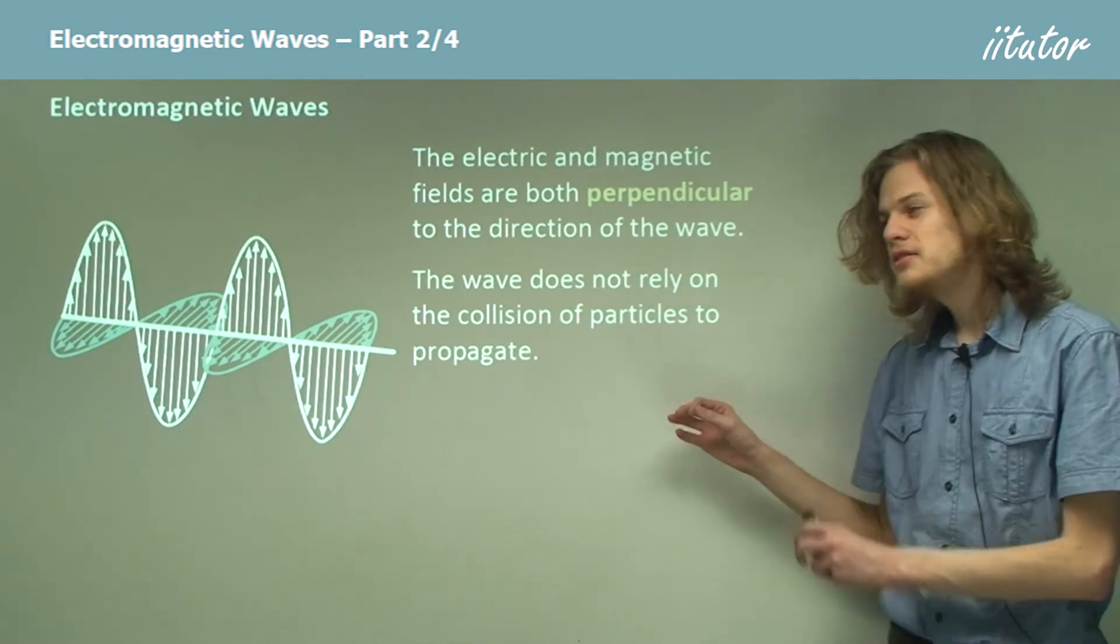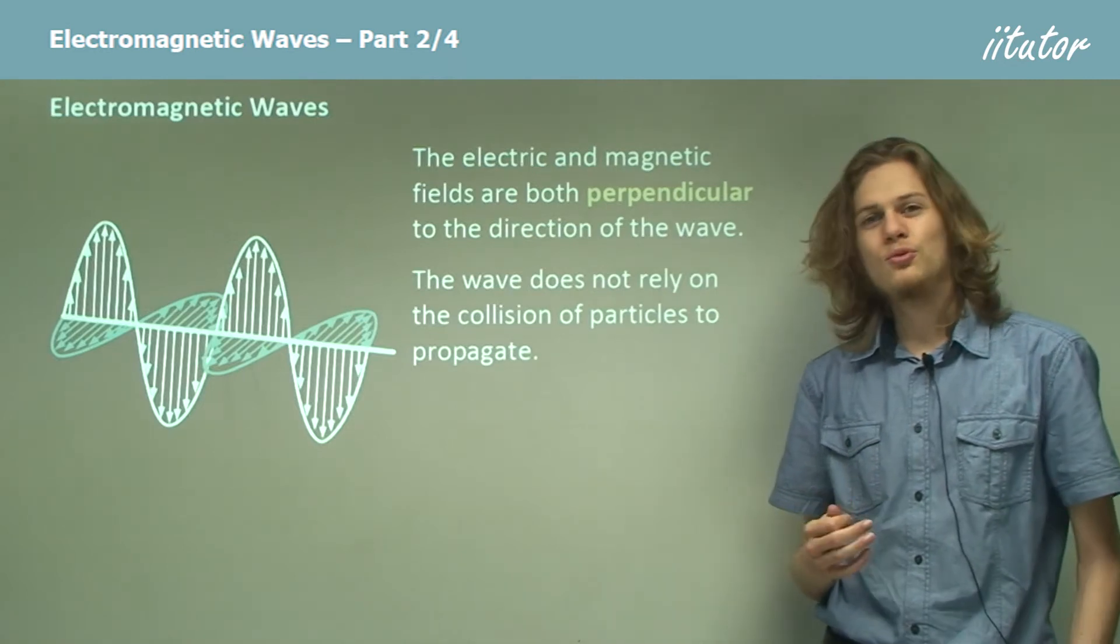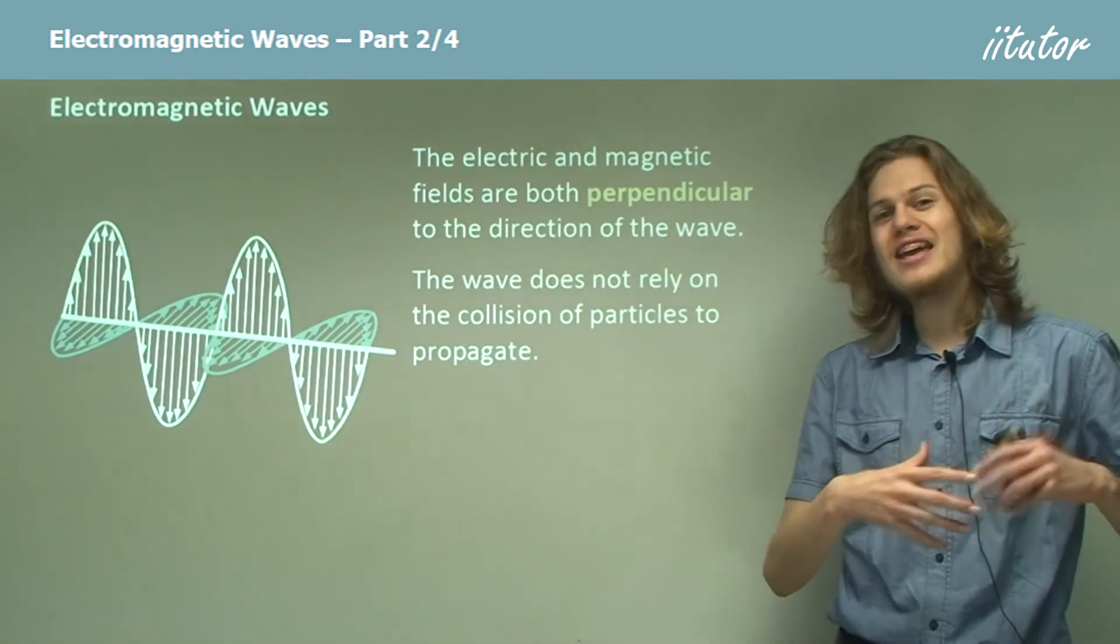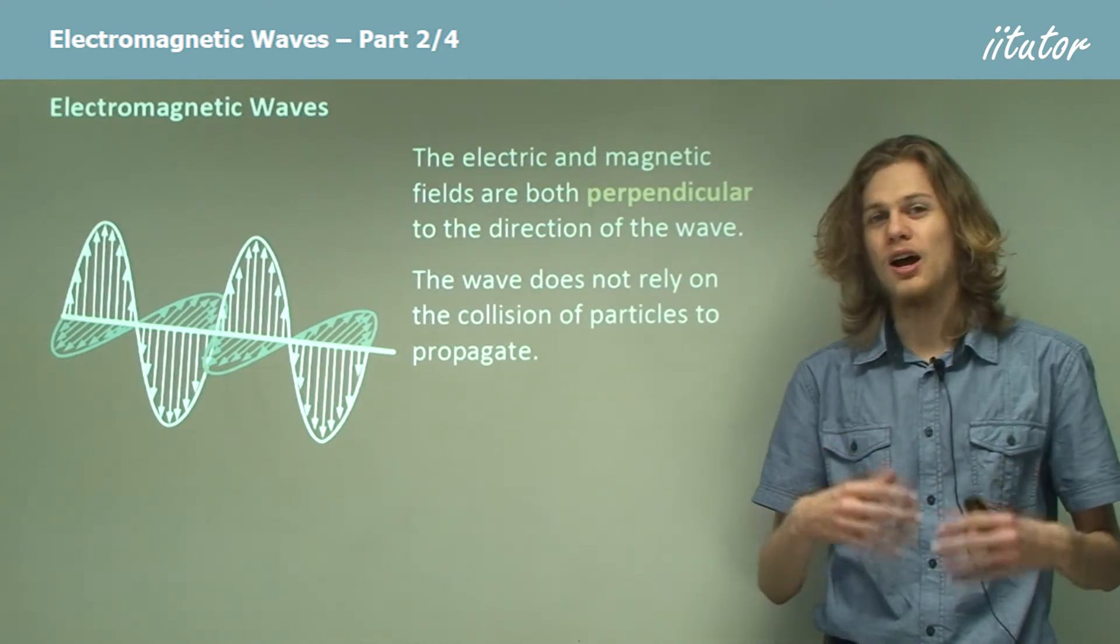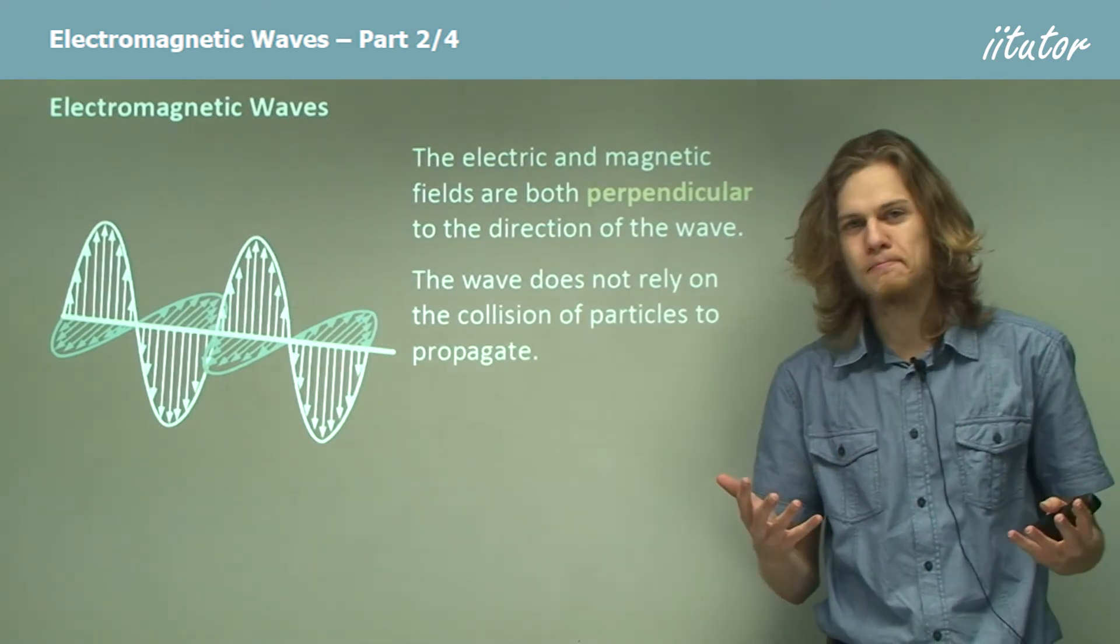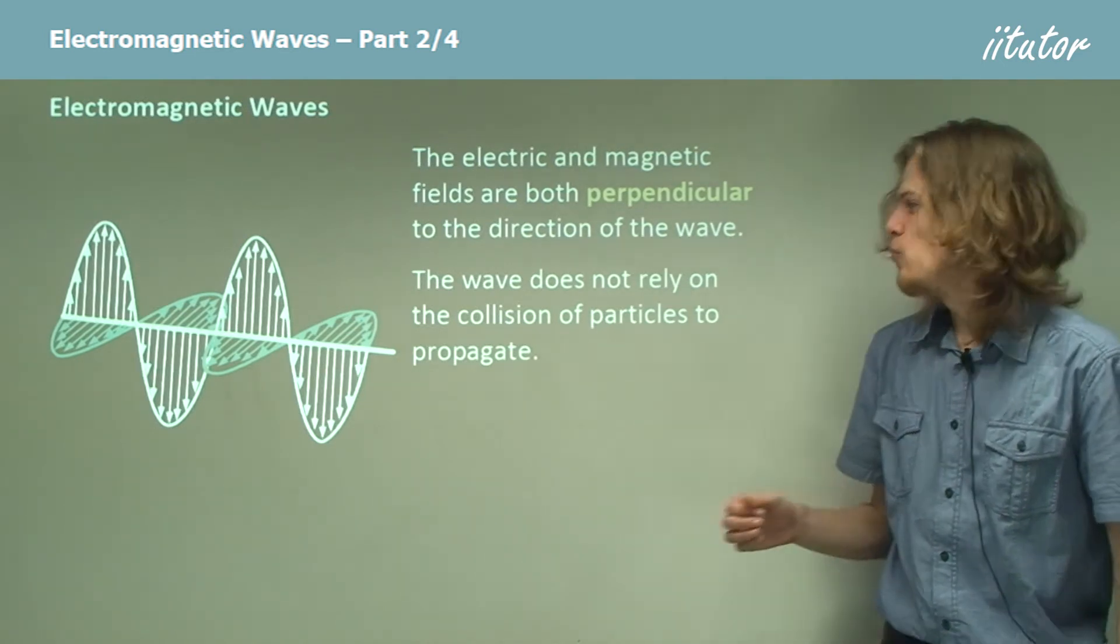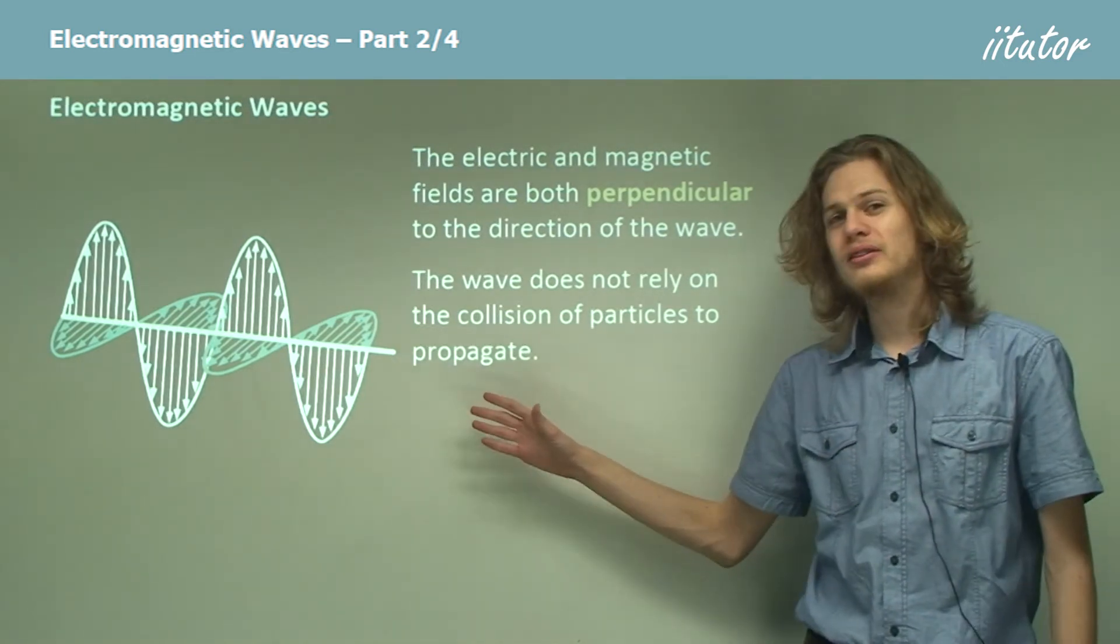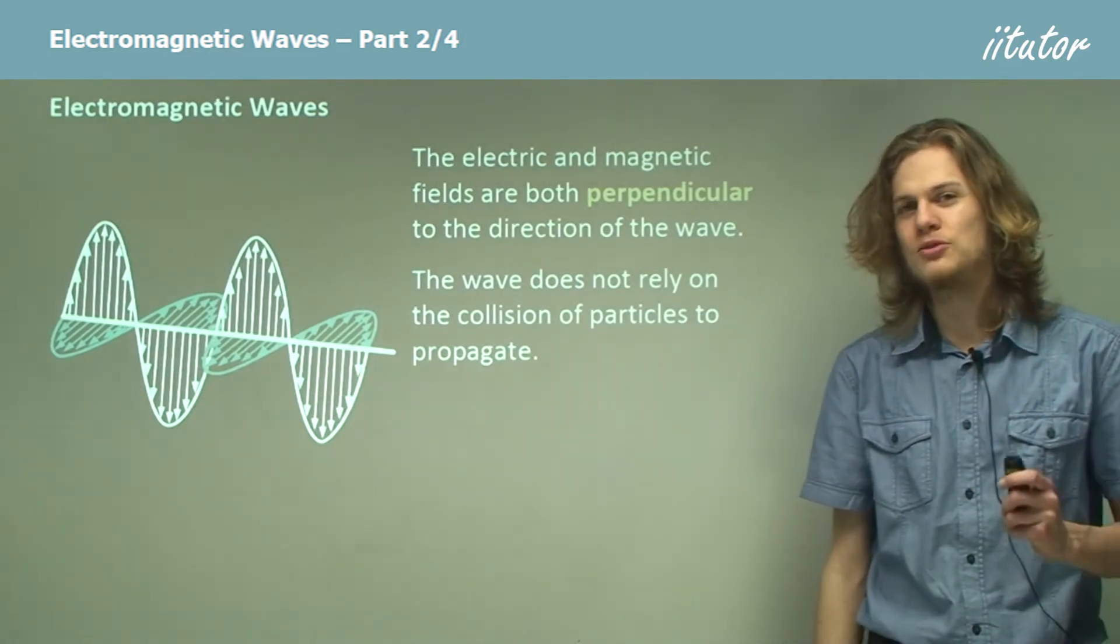As well as this, the wave does not rely on the collision of particles to propagate. We can create electric or magnetic fields even in empty space, where there are no atoms, no air, none of anything. That means that even if we don't have any particles at all, we can still get these electromagnetic waves travelling, or propagating, through empty space.